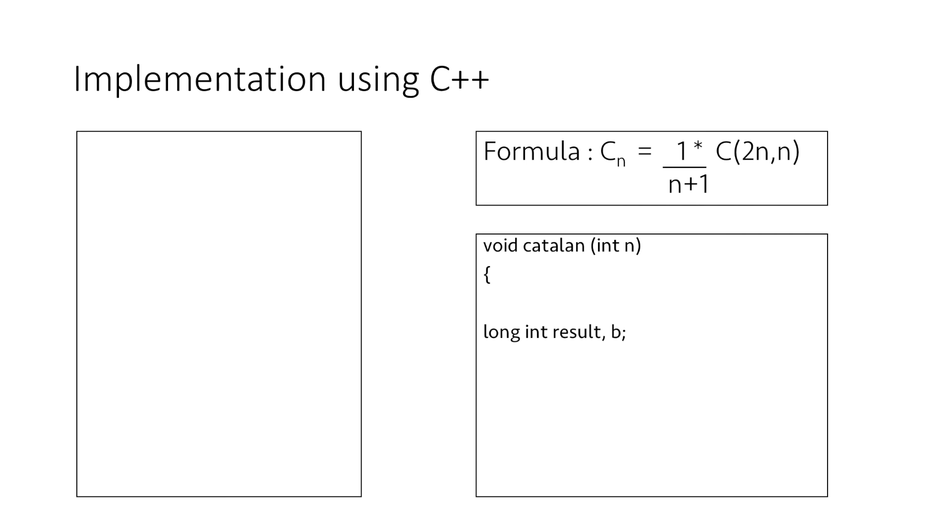Next we declare two variables result and b. We use b to store the binomial coefficient of 2n, n that is required for our formula and we use the function binomialC to calculate the binomial coefficient for 2n, n. We implemented this function to calculate the binomial coefficient in a previous video. You can refer to that video to understand the working of this binomial function.